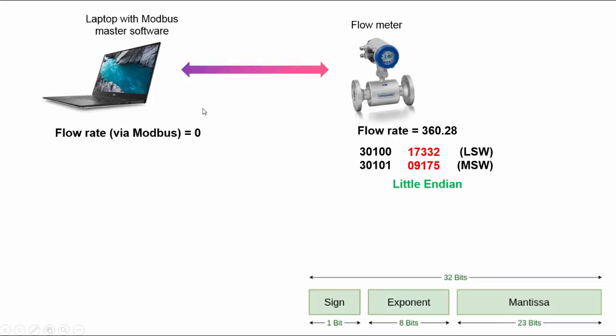The Modbus master software however defaulted to Big Endian format, and this is where the problem occurred. It read the registers correctly, perfectly, however it assumed incorrectly that this was the MSW and this was the LSW, when the opposite really was the fact.